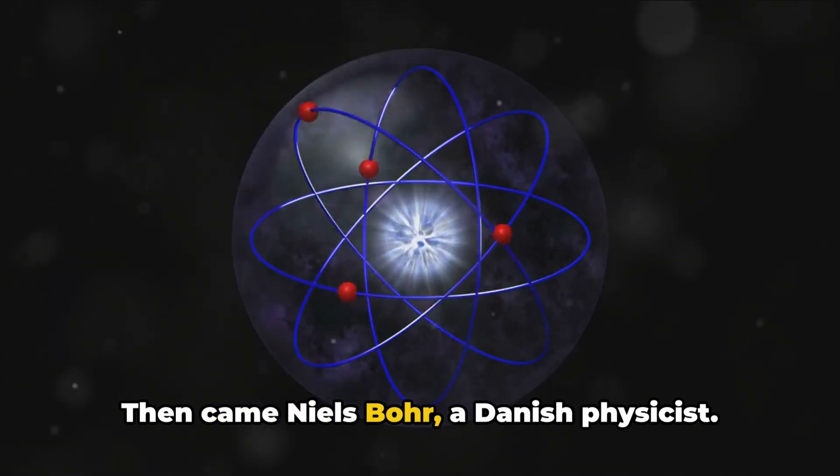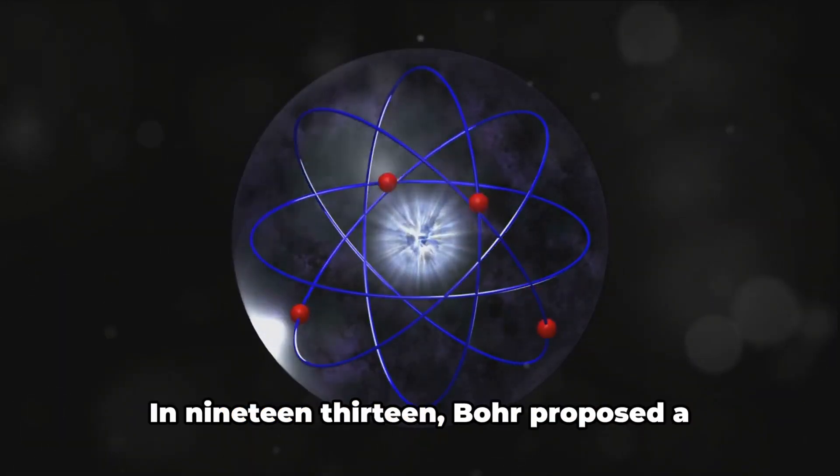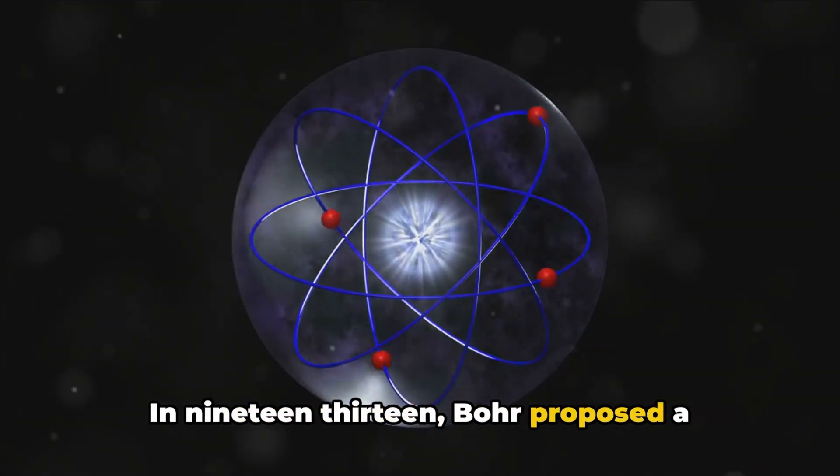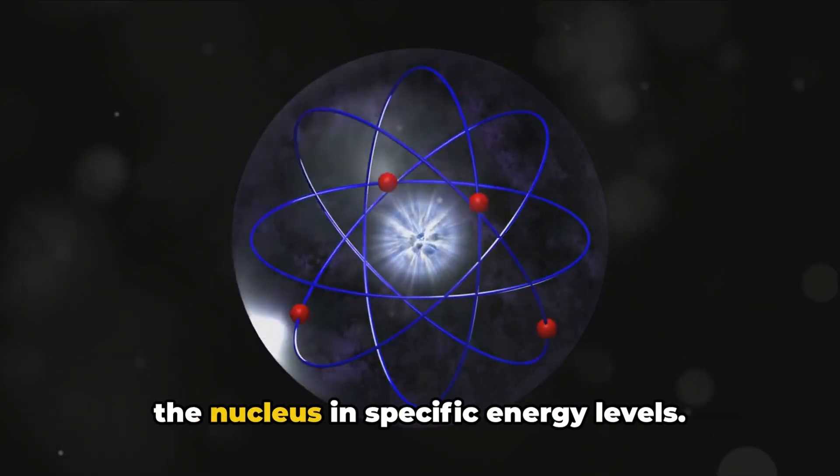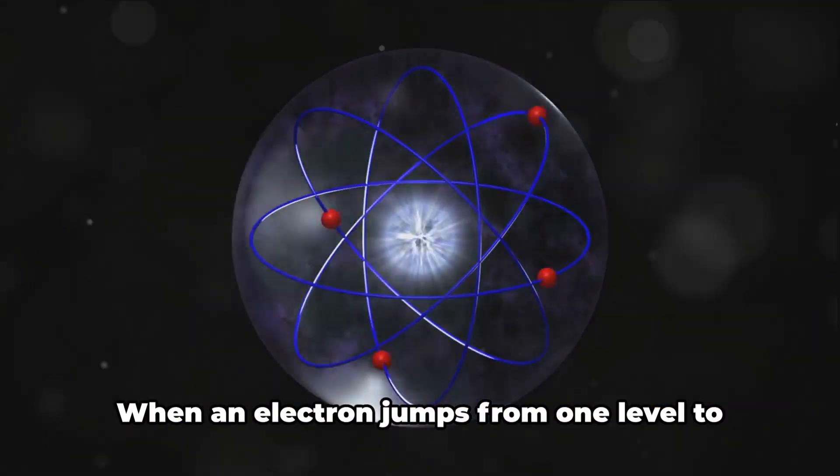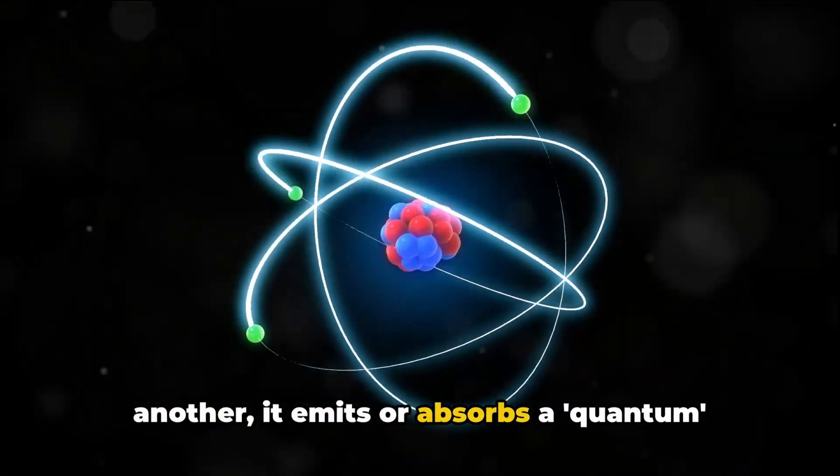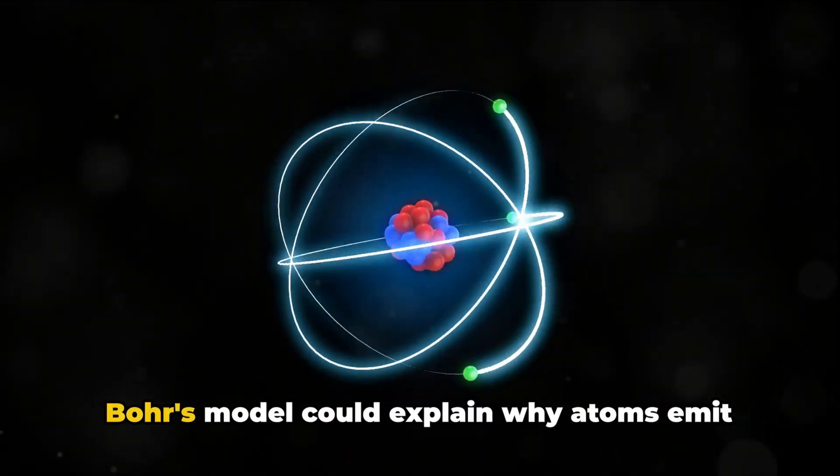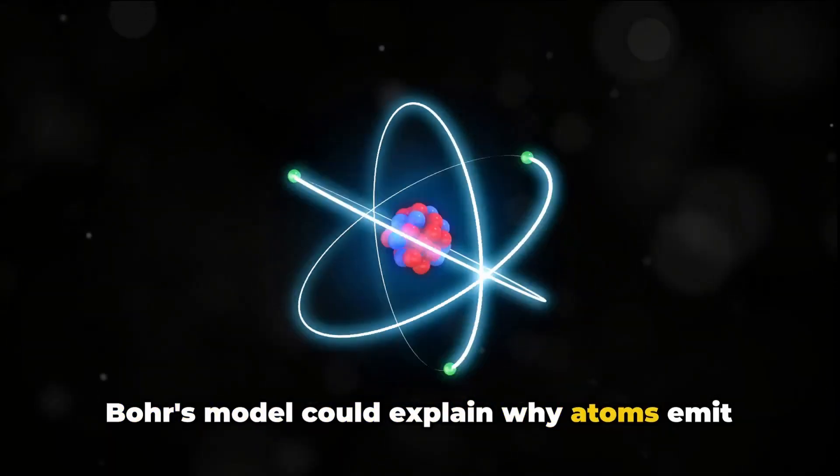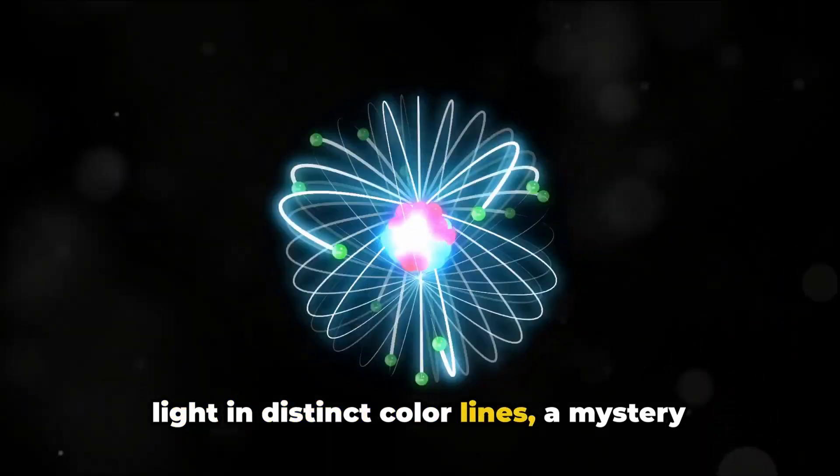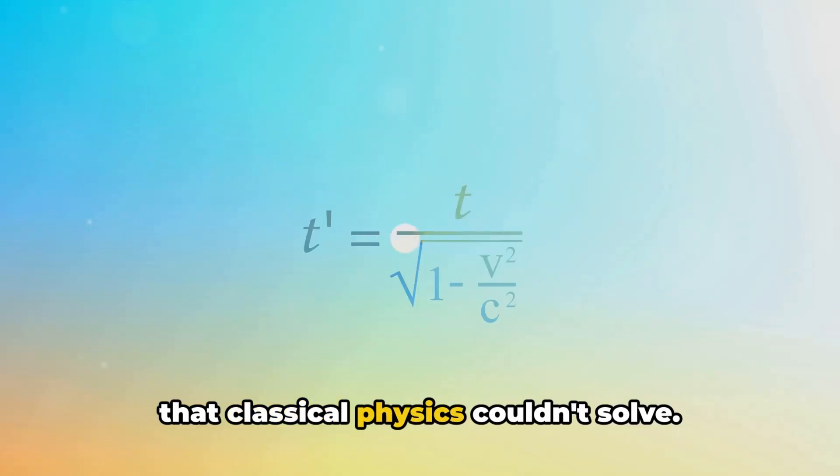Then came Niels Bohr, a Danish physicist. In 1913, Bohr proposed a model of the atom where electrons orbit the nucleus in specific energy levels. When an electron jumps from one level to another, it emits or absorbs a quantum of energy. Bohr's model could explain why atoms emit light in distinct color lines, a mystery that classical physics couldn't solve.